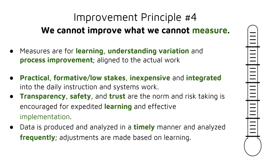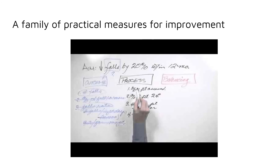Transparency, safety, and trust are the norm, and risk-taking is absolutely encouraged to expedite learning. Data is produced and analyzed in a timely manner, analyzed frequently, and adjustments are made based on this learning. This video clip helps explain the types of measurements we employ in the NICs — that is, measurement for improvement — using a variety of practical measures for both processes and outcomes.